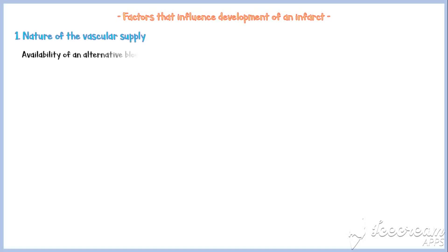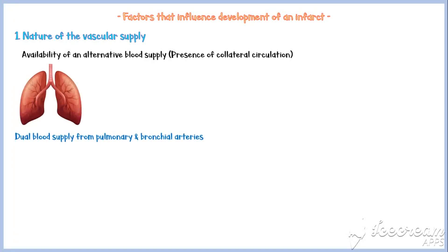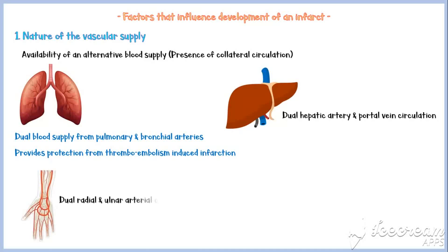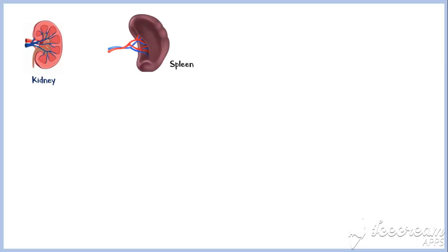Now let's discuss the factors that influence development of an infarct. The most important determinant is the nature of the vascular supply — meaning availability of an alternative blood supply, or the presence of collateral circulation. For example, the lung has dual blood supply from pulmonary and bronchial arteries, providing protection from thromboembolism-induced infarction. Similarly, the liver has dual hepatic artery and portal vein circulation, and the hand and forearm with their dual radial and ulnar arterial supply are usually resistant to infarction. In contrast, renal and splenic circulations are end arterial, and vascular obstruction generally causes infarction.